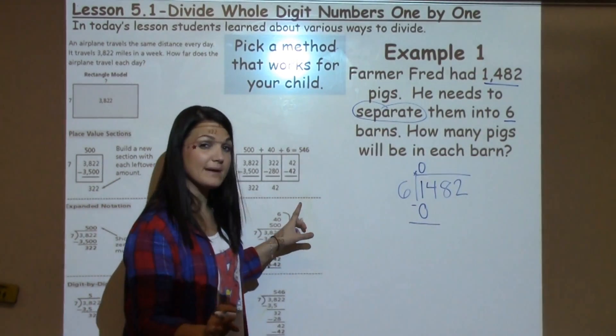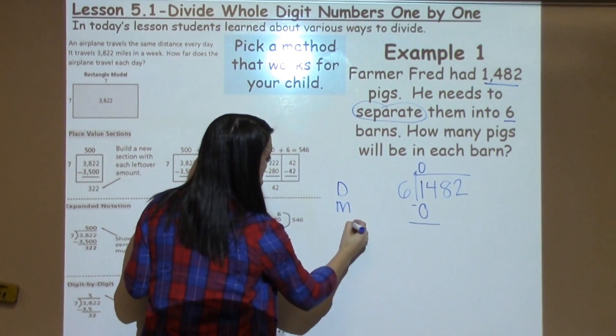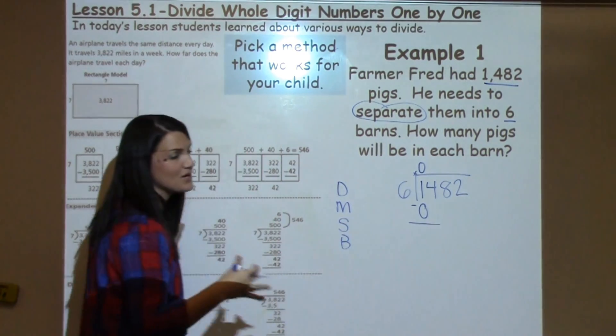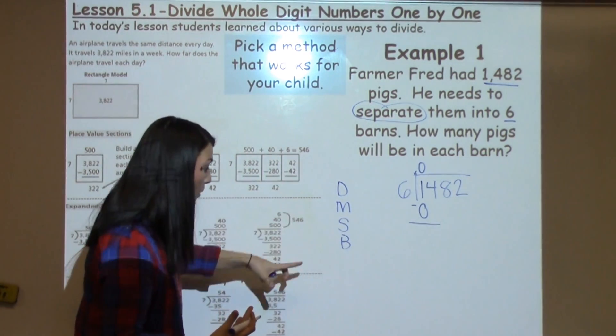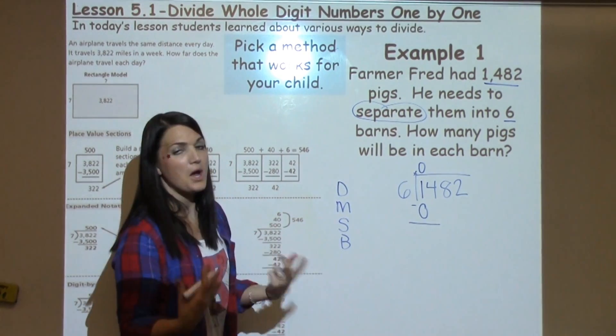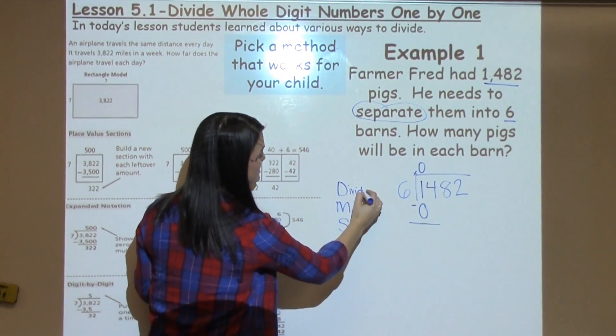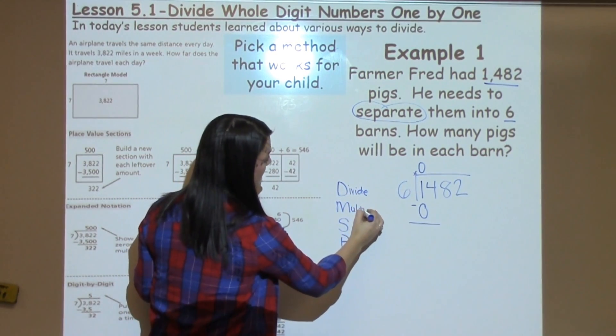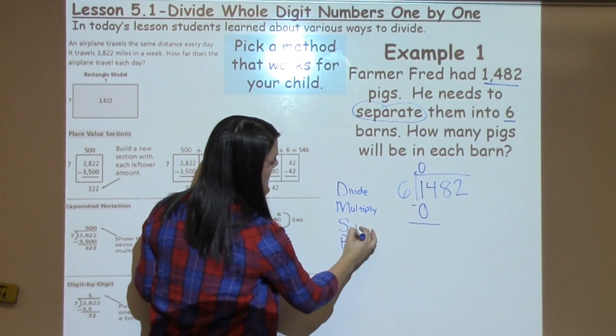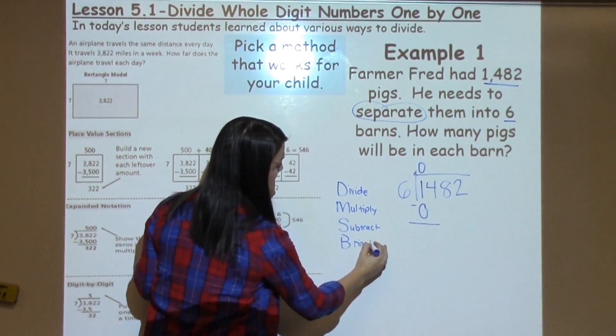So there's really four steps when we're looking at long division. There's D, M, S, B. And students have learned lots of different sayings to remember the order. Does McDonald's serve burgers? Do monsters scare babies? All sorts of different things that they can remember. But all it means is the first thing I do is divide. Then I multiply. Then I subtract. And the last thing I do is bring down the next number.